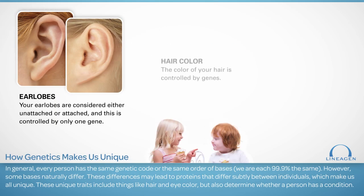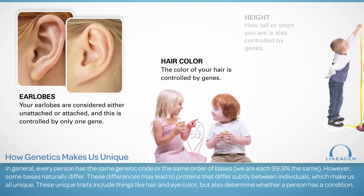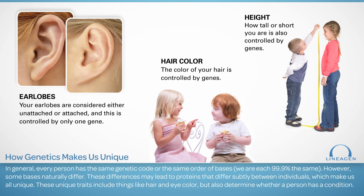In general, every person has the same genetic code, or the same order of bases. We are each 99.9% the same. However, some bases naturally differ. These variations lead to different proteins, which make us all unique. These unique traits include things like hair and eye color, but also determine whether a person has a medical condition.